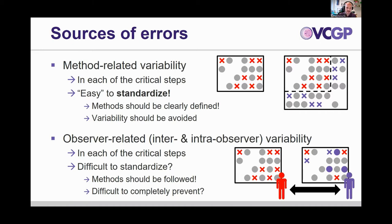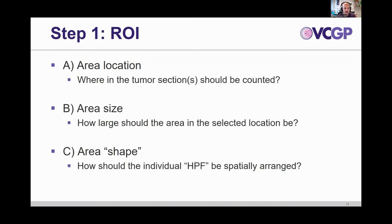Method-related variability seems at least easy to standardize, and our goal is to define methods everyone can use. Any such variability should be avoided. Observer-related variability depends on using those methods accurately, but there is also some variability that seems difficult to standardize. Step number one is to find an area within the tumor section for counting mitotic figures. This area can be of different locations within the tumor section, can have a different area size, and can have a different shape — we'll go through each of those.